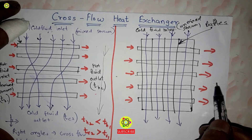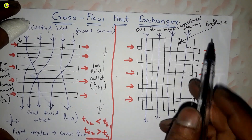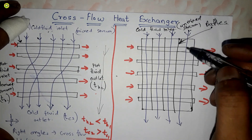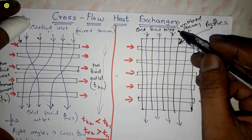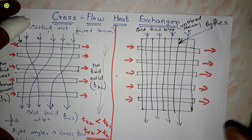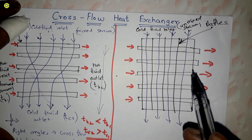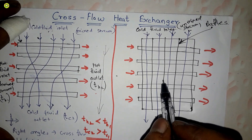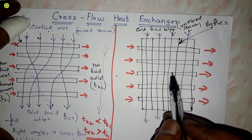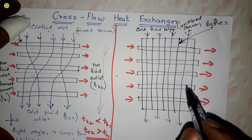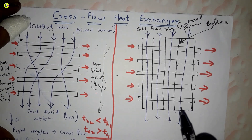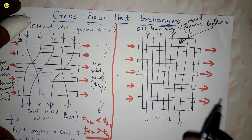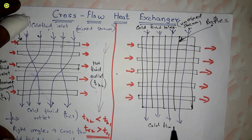This shows the hot fluid inlet and hot fluid outlet. This is an unmixed stream because the streams are not mixing with each other — there is one stream, a second, a third, a fourth, and these streams flow inside separate partitions or baffles. The cold fluid does not mix with another stream, which is why this is an unmixed stream cross flow heat exchanger. This is the cold fluid outlet.